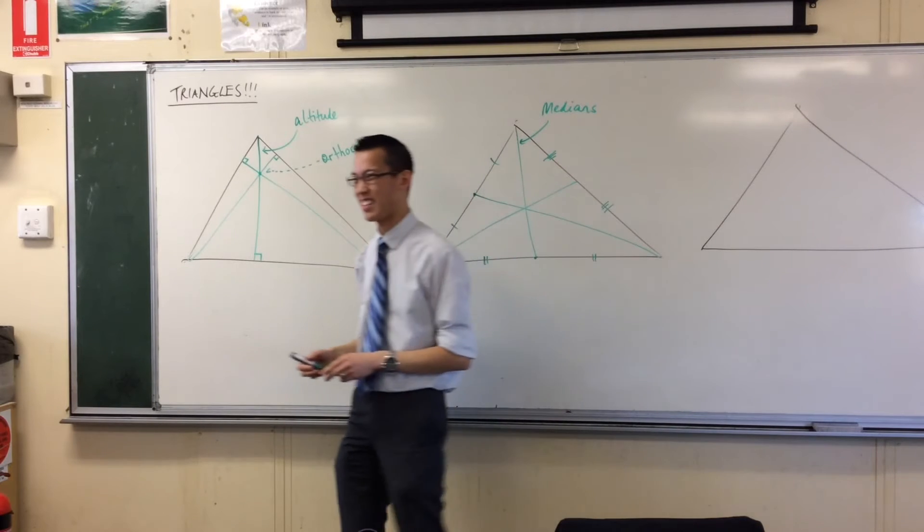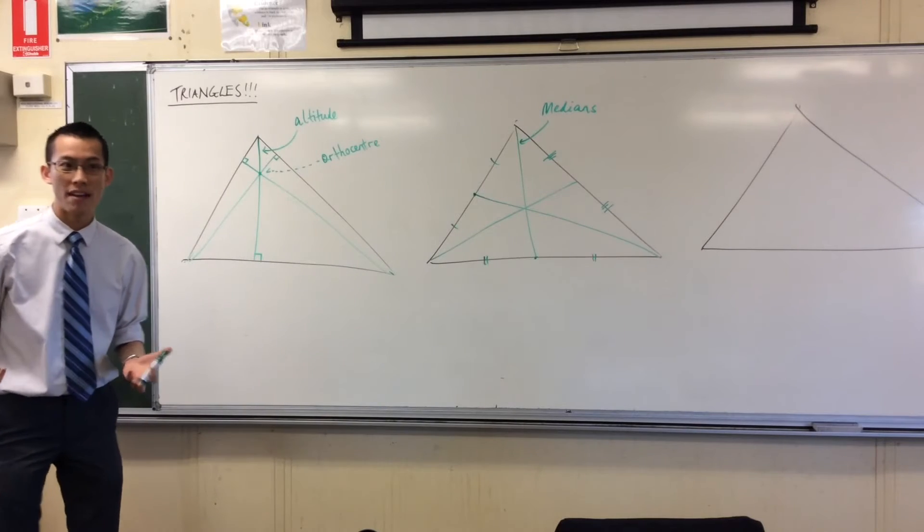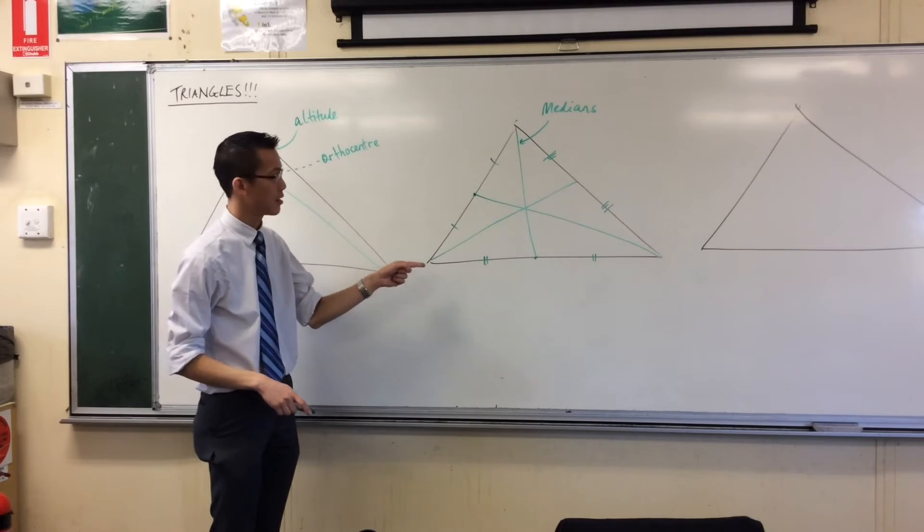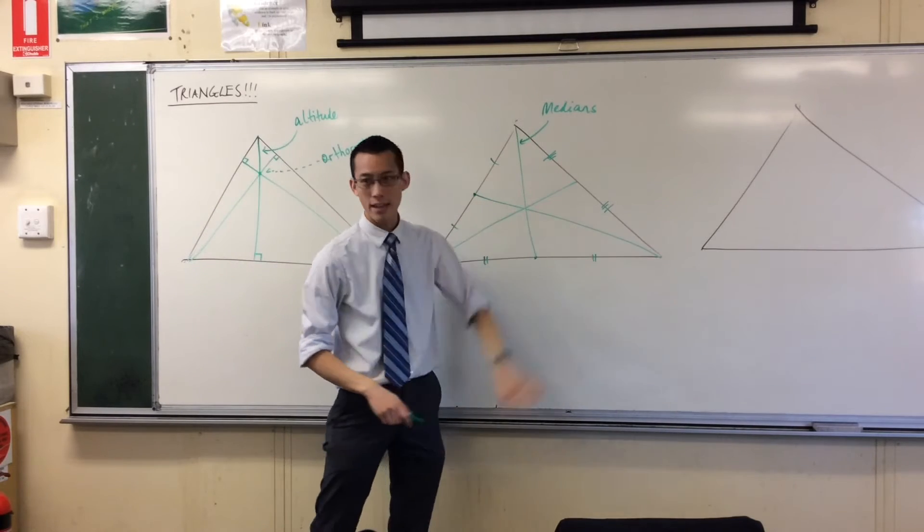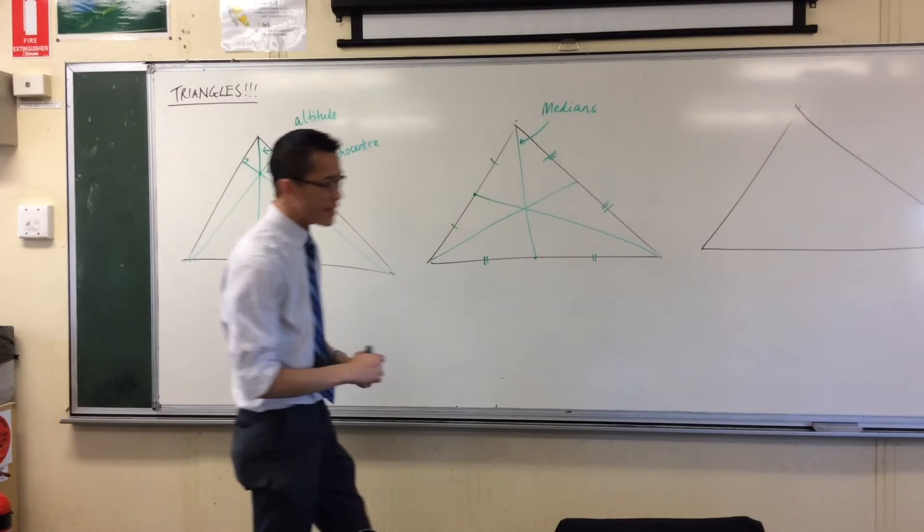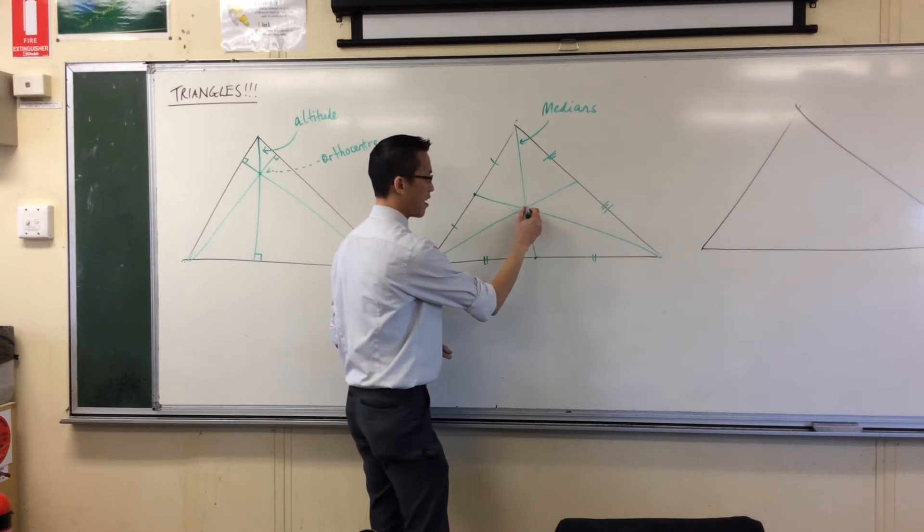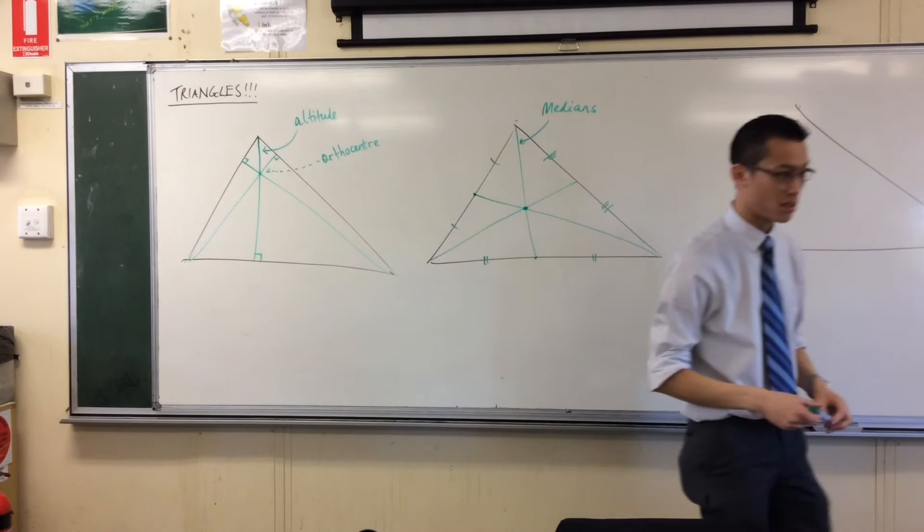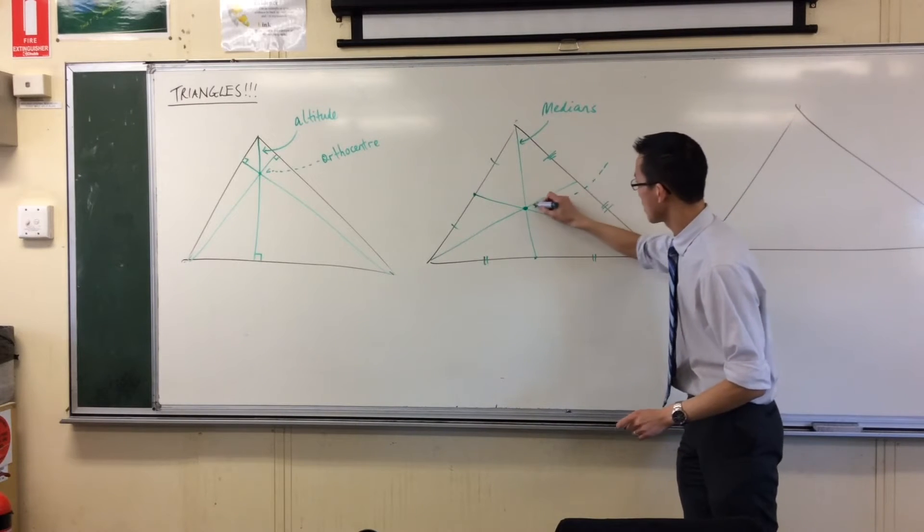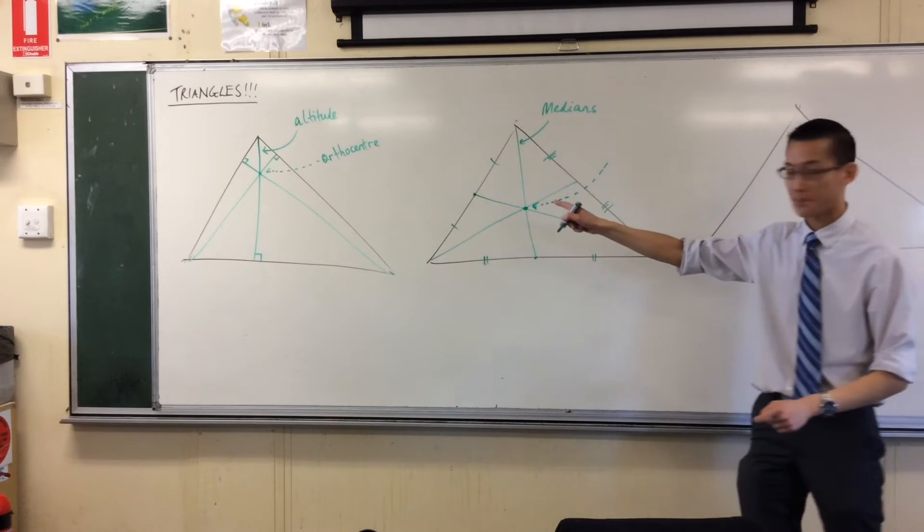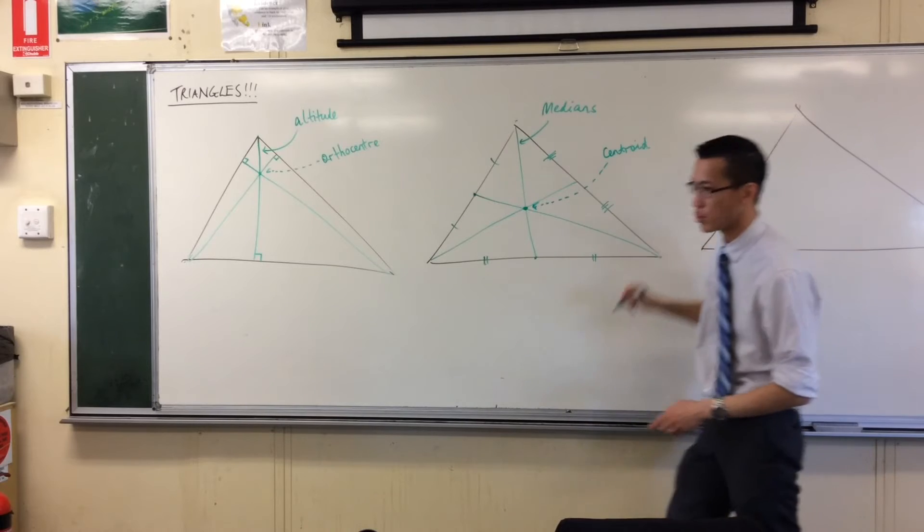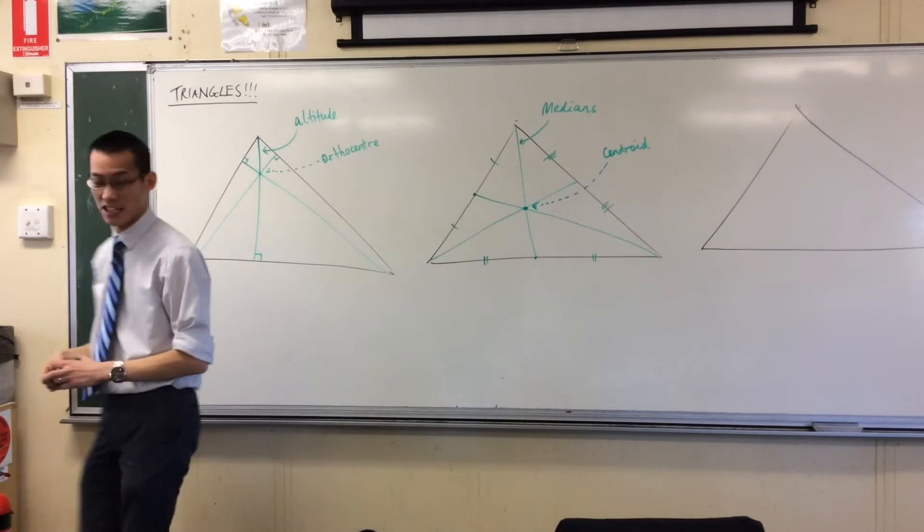They're called medians because just like in statistics, the median gives you the middle - it's the middle score. So the medians, these lines, they divide up each side in half. They are in the middle, hence median. The medians also are concurrent, which is astonishing, really. The name of where they all concur is centroid.